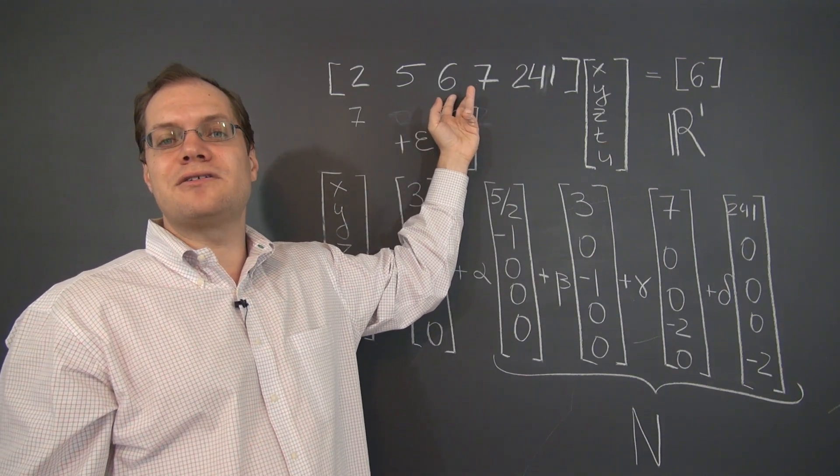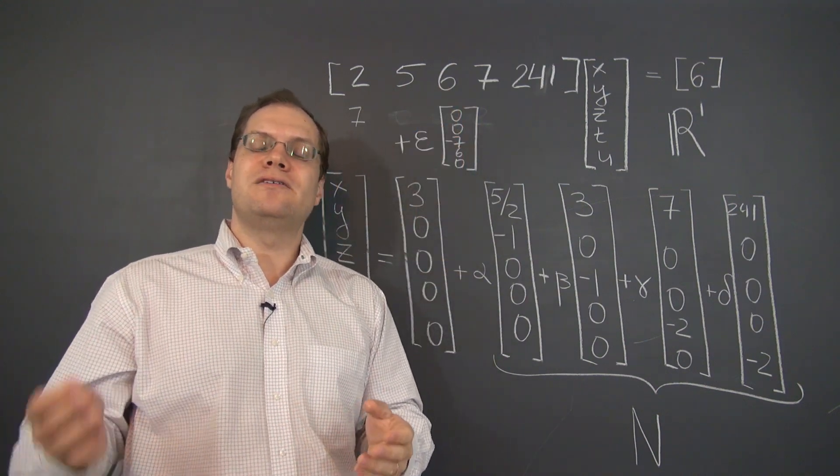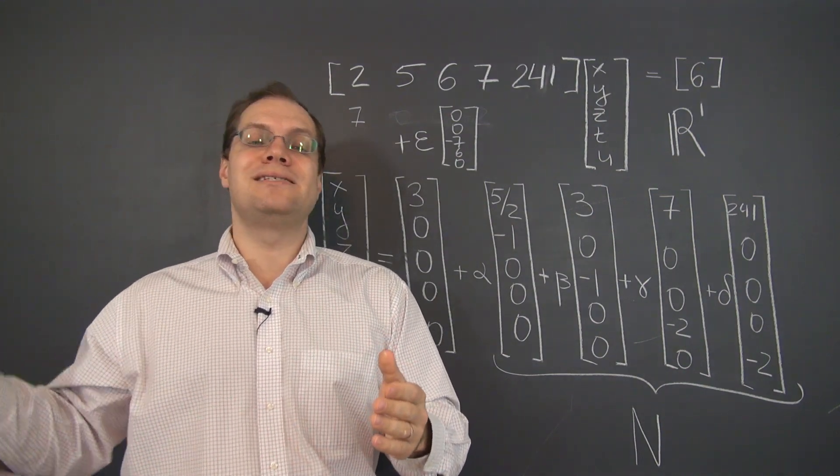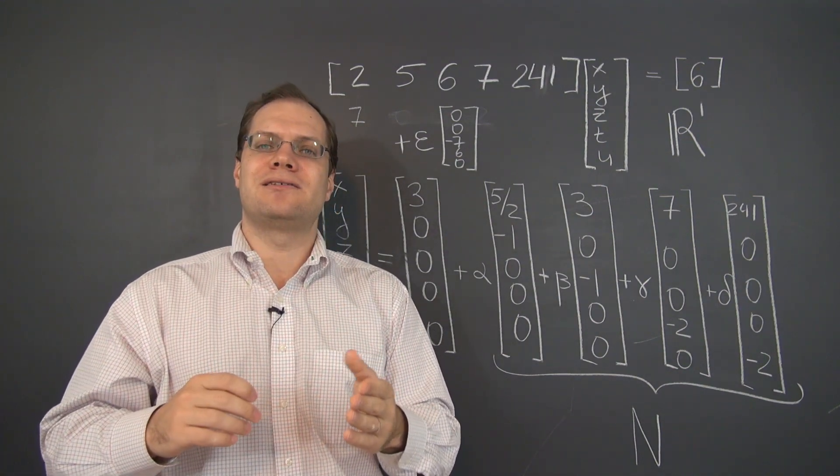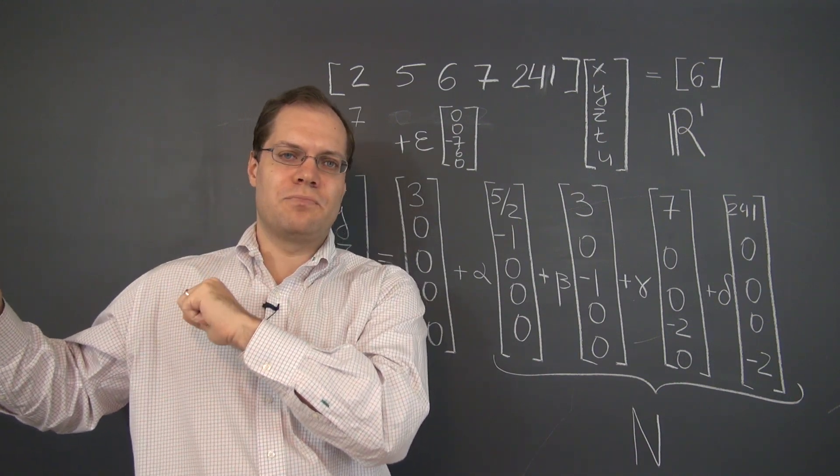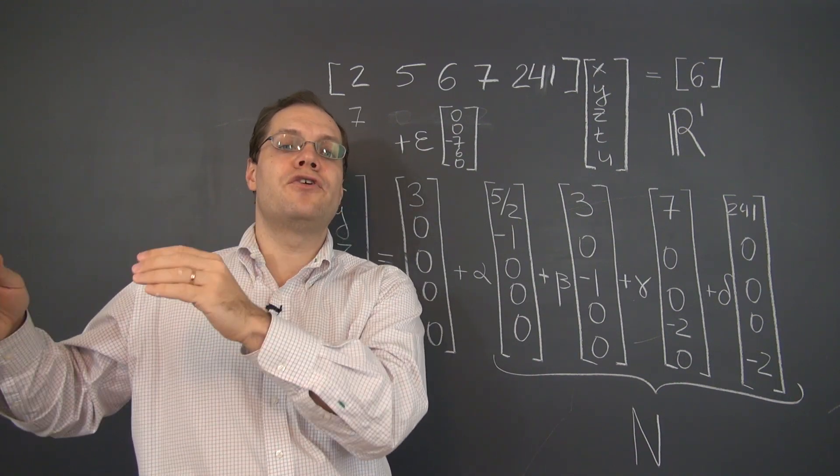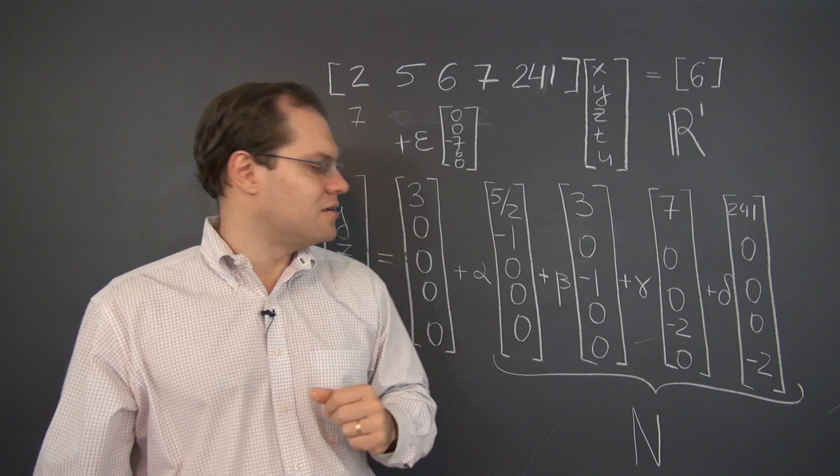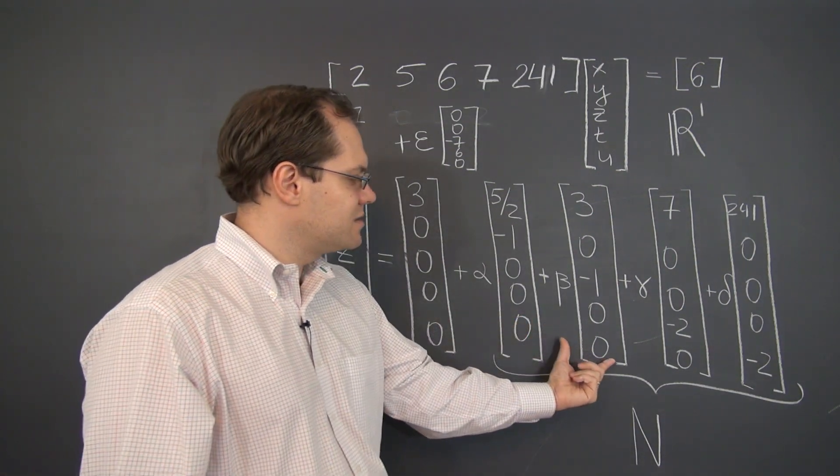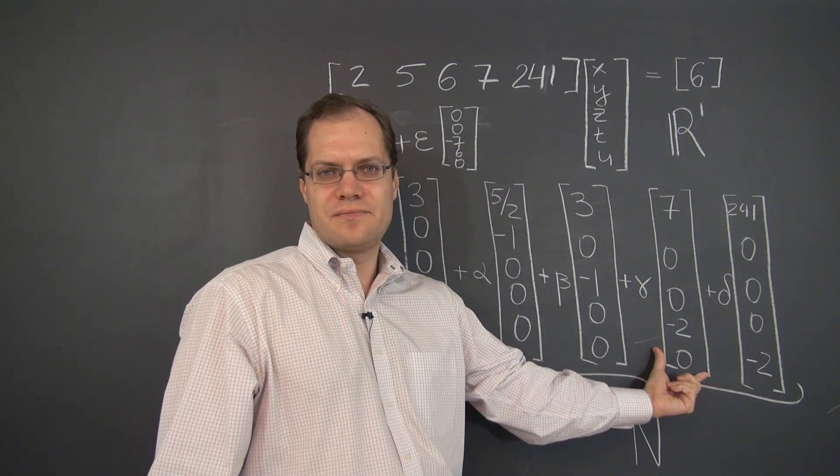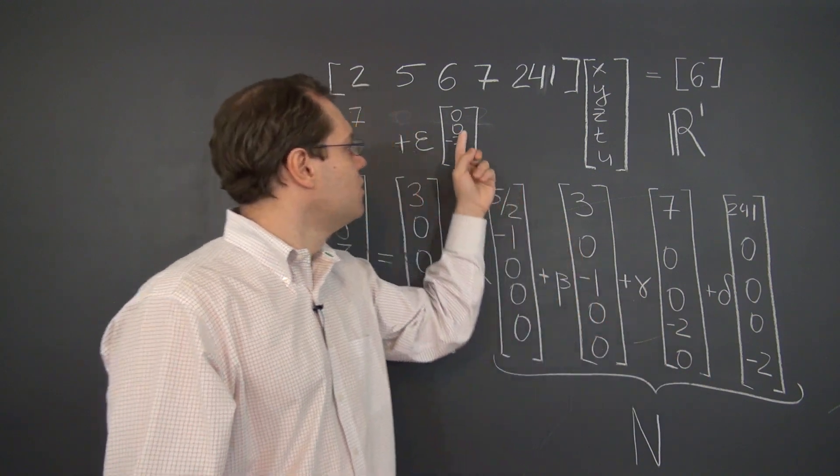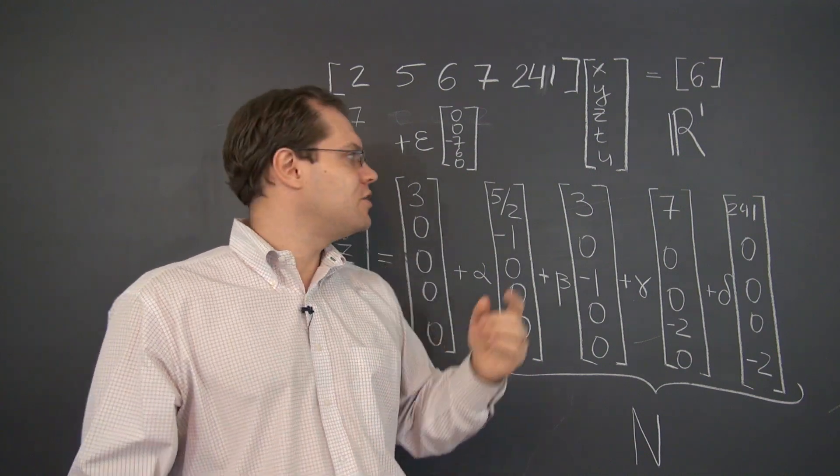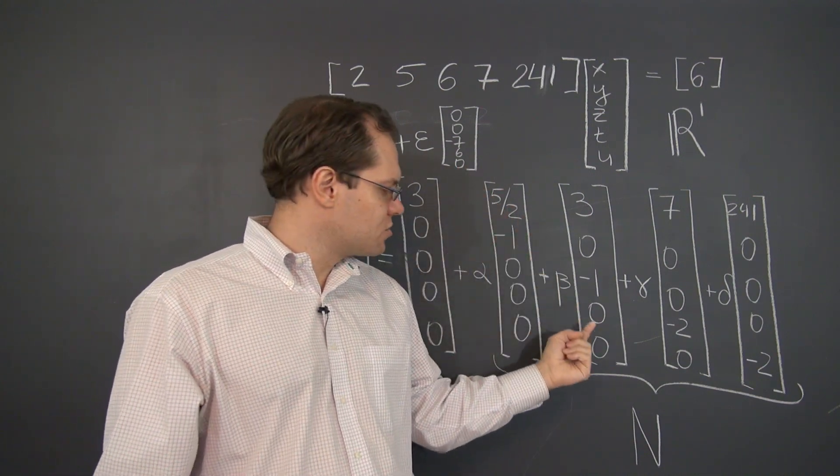So the example that I usually have is if person B makes twice what person A makes, and person C makes ten times what person A makes, and person C makes five times what person B makes. So the first two pieces of information already give us a third piece of information. The same thing happens here. When we've observed this and this, then we already know this relationship among the columns.